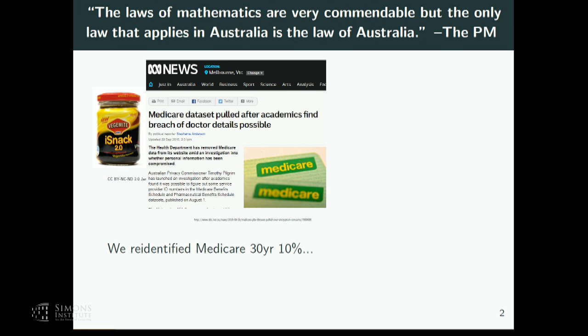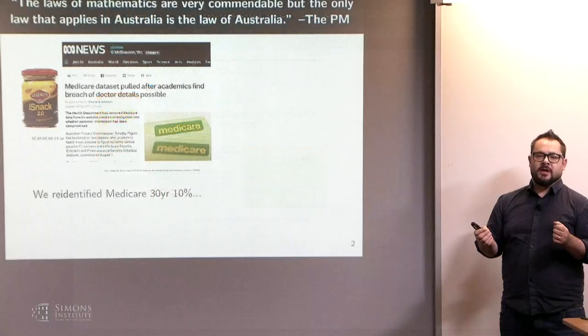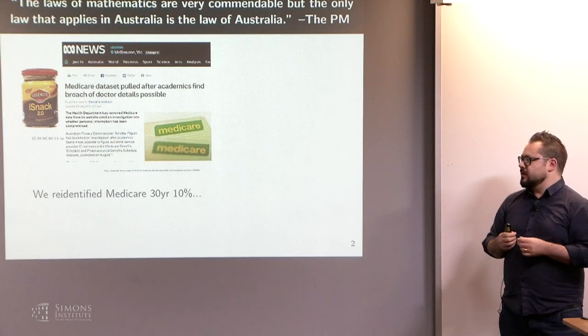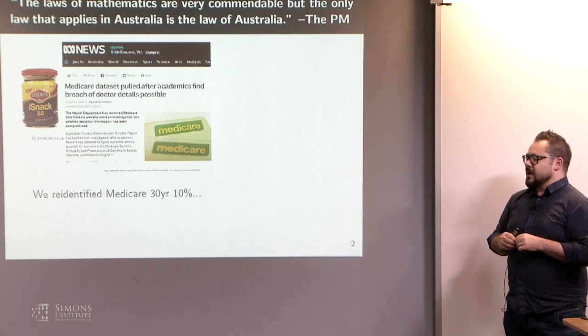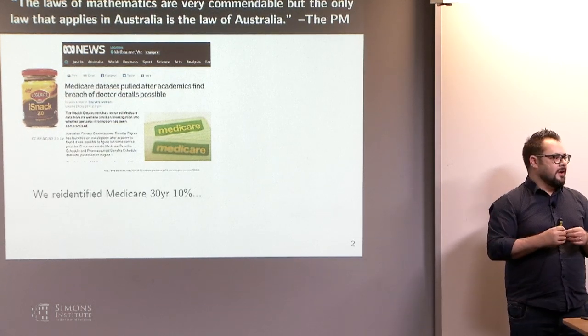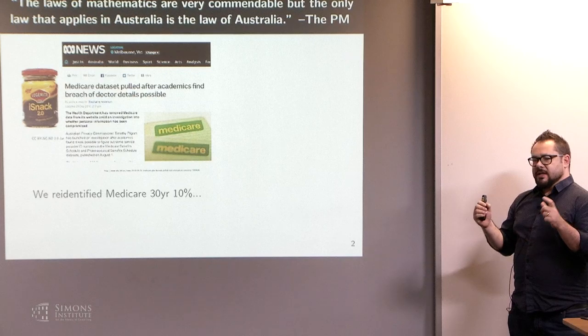I'll talk about two anecdotes of things that have happened in the last few years. The first one is probably the most relevant to differential privacy. This was in 2016 — the federal department of health. Healthcare in Australia is essentially universal; everyone uses the public health system. The department, under pressure to share data, decided to release 30 years worth of unit record level data of medical billing and pharmaceutical prescriptions for 10% of the population — a bit over 2 million people.